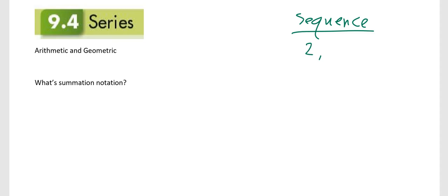2, let's say 5, 8, 11, 14. That's a sequence. A series is 2 plus 5 plus 8 plus 11 plus 14. That's the difference between these two terms. Sequence is a list, series is a sum.